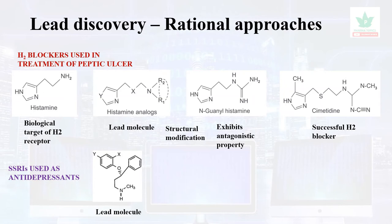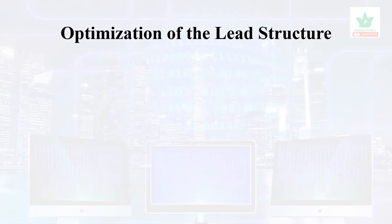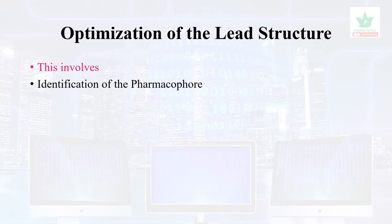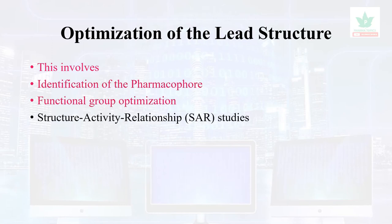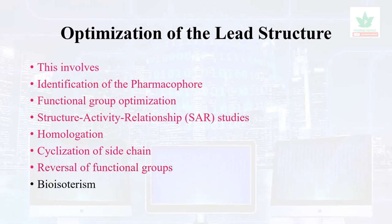The next example is selective serotonin reuptake inhibitors (SSRIs). Serotonin was used as the lead molecule; structural modification led to fluoxetine and paroxetine coming to market through optimization. This optimization of lead structure involves identification of the pharmacophore, functional group optimization, structural activity relationship studies, homologation, cyclization of the side chain, reversal of functional groups, and use of bioisostere concepts.